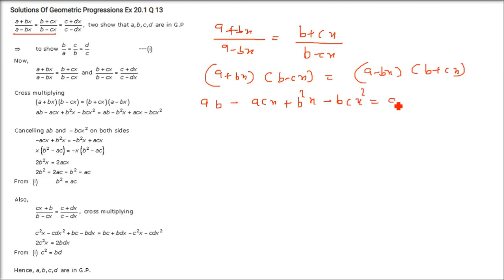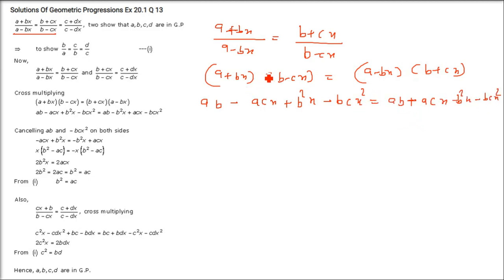The right side expands to: AB + ACX − B²X − BCX². Now AB cancels and BCX² cancels. We are left with −ACX + B²X on the left and ACX − B²X on the right.